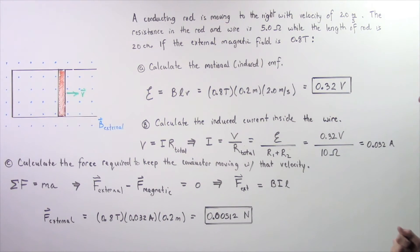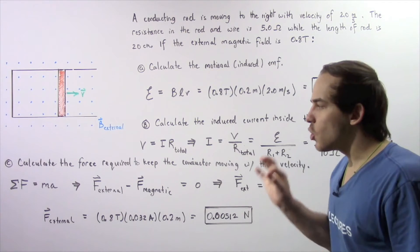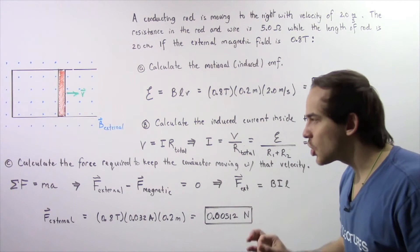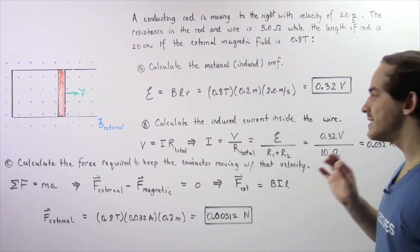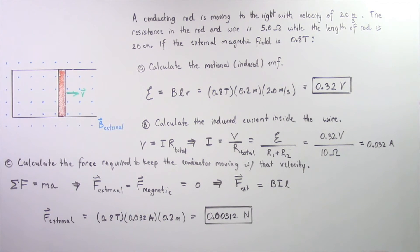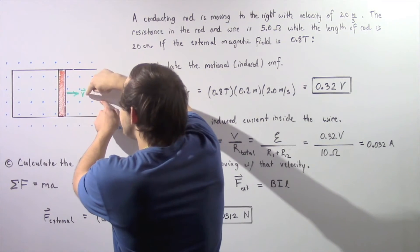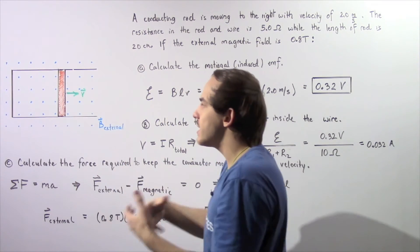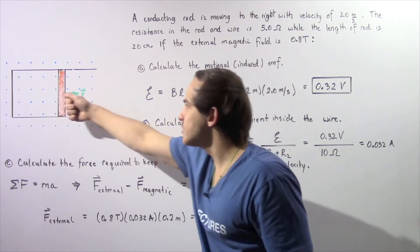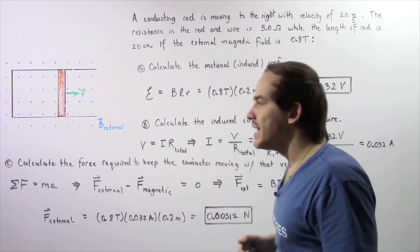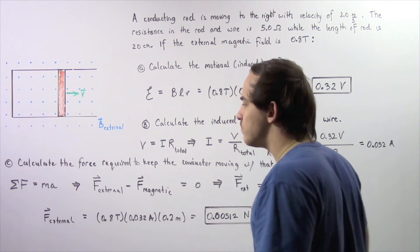And finally, let's move on to part C. Calculate the external force required to keep the conducting rod moving with that constant velocity. So our velocity is constant and some external force is creating that motion.